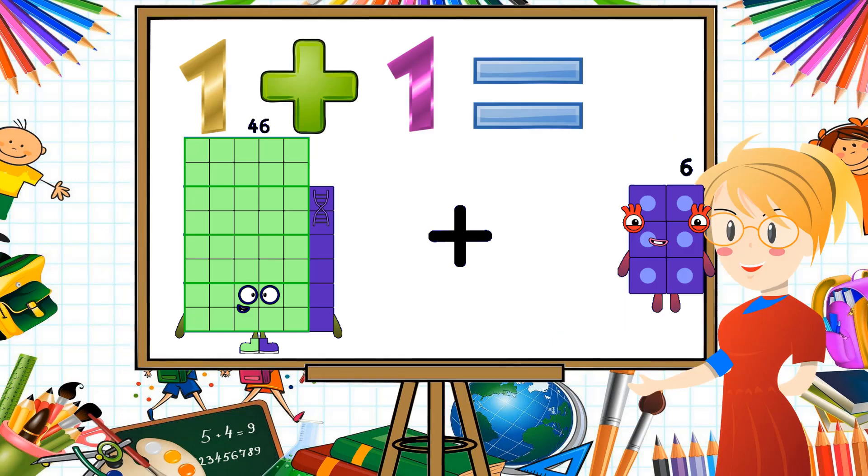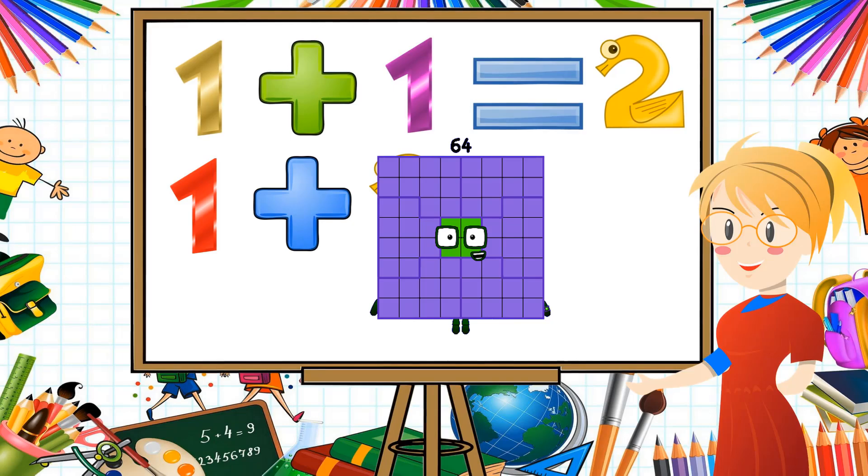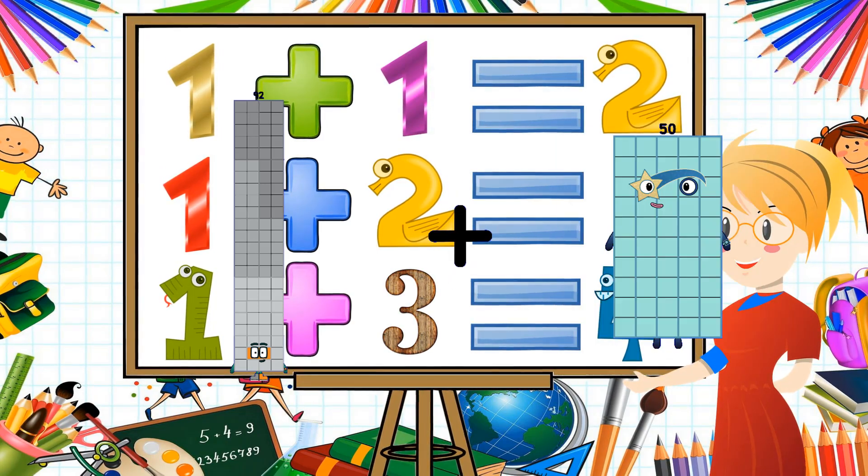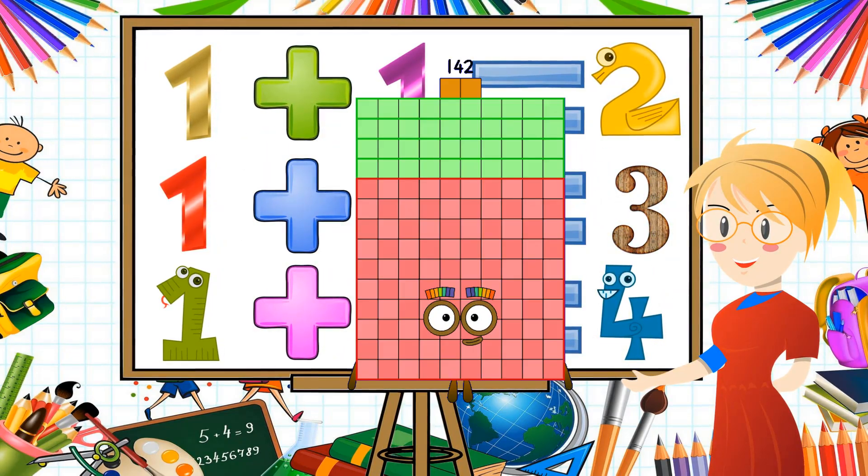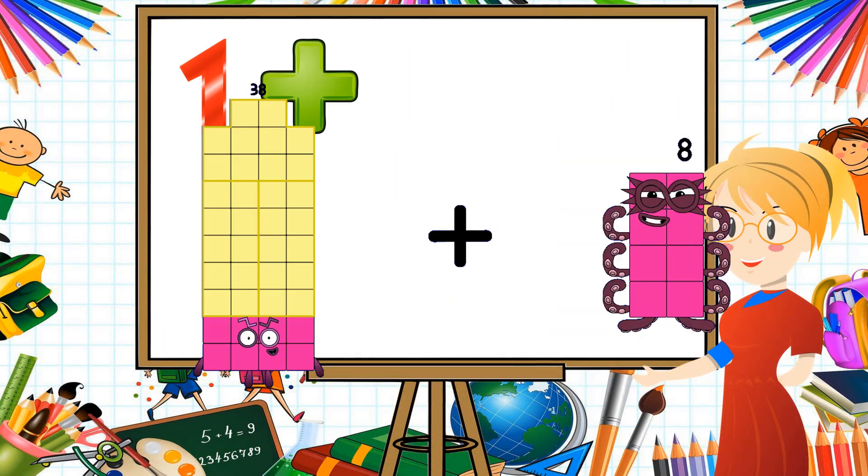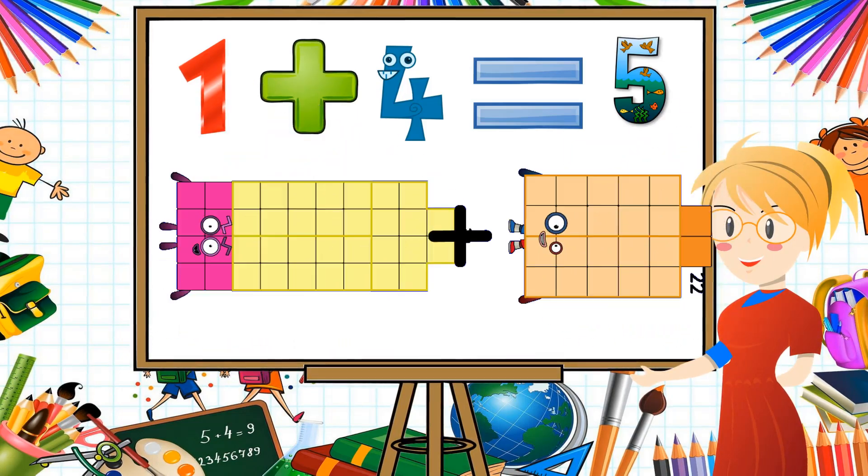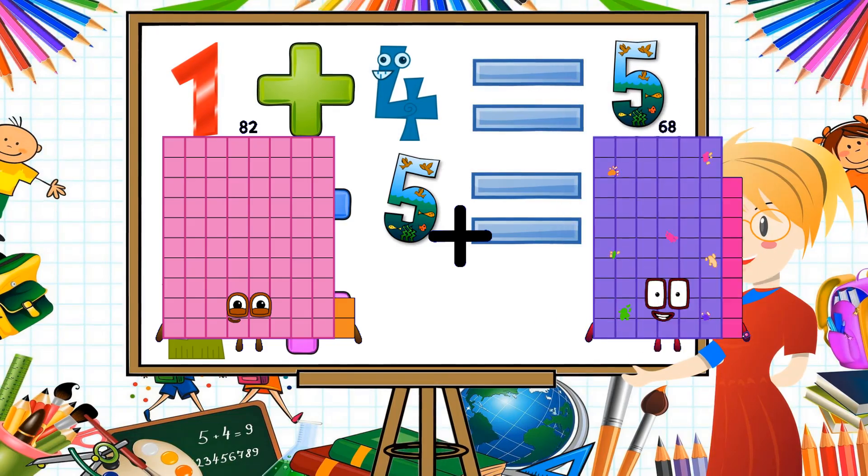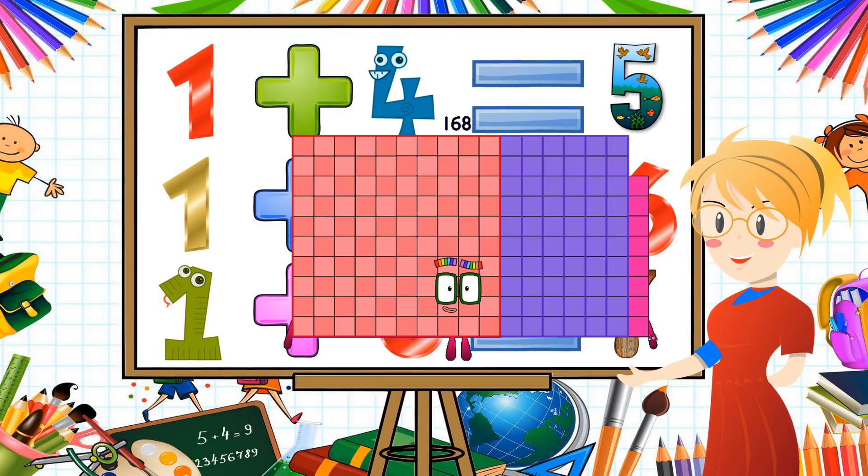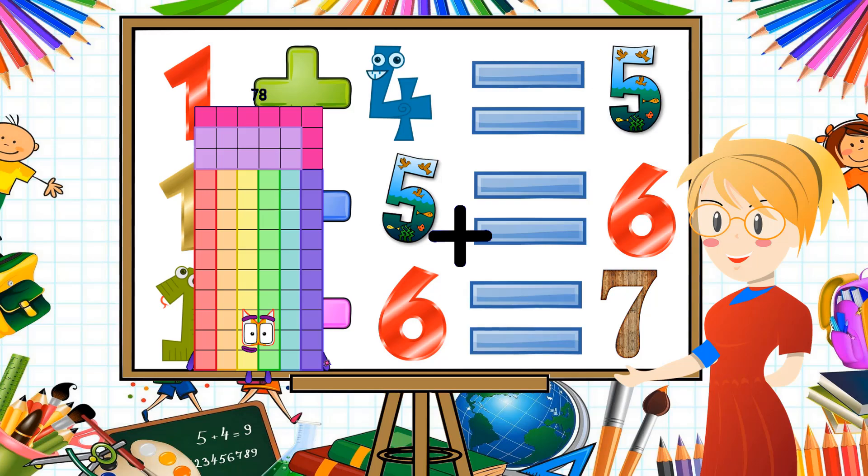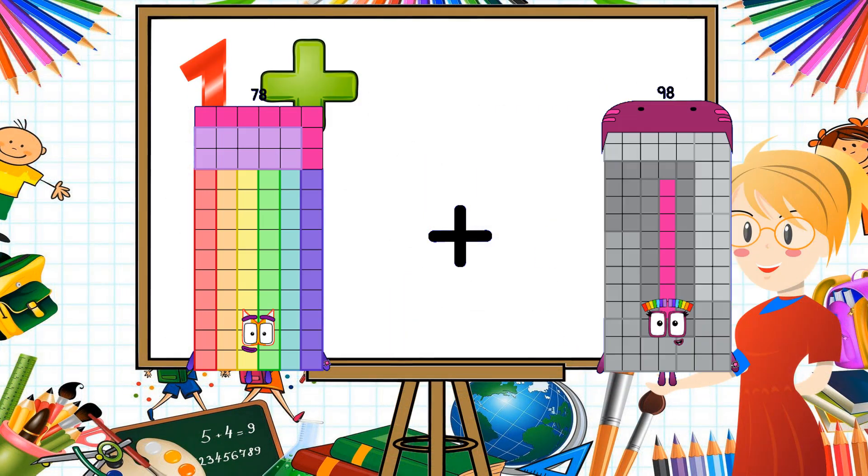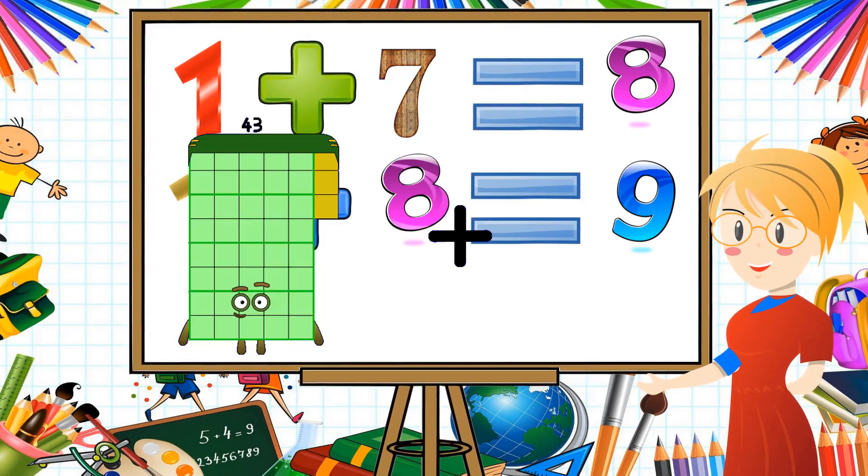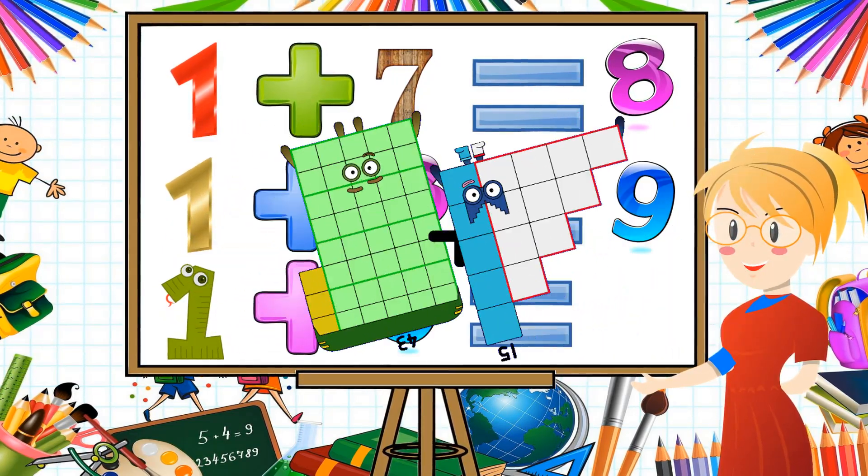46 plus 18 equals 64. 92 plus 50 equals 142. 38 plus 22 equals 60. 58 plus 110 equals 168. 78 plus 94 equals 172. 43 plus 15 equals 58.